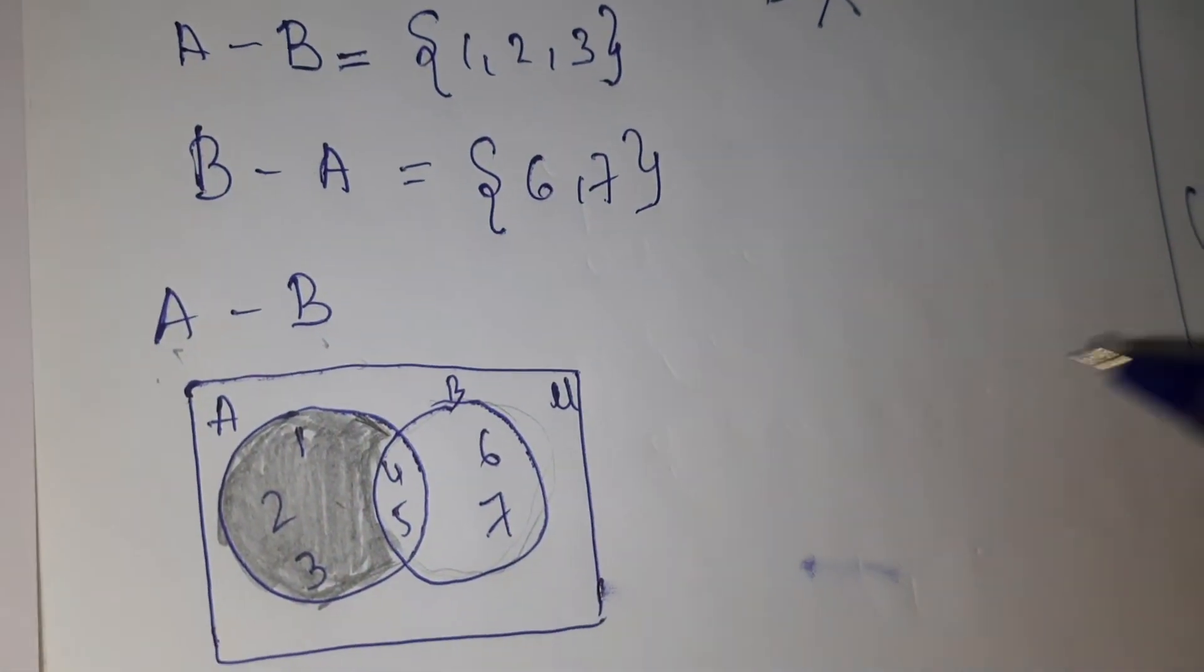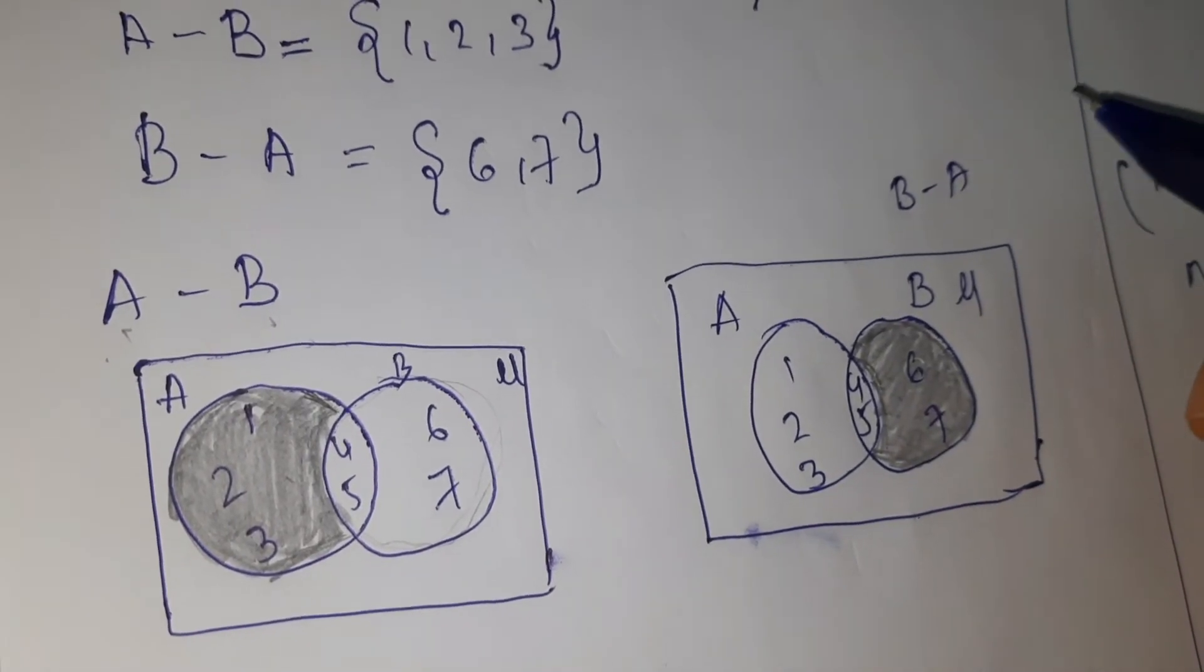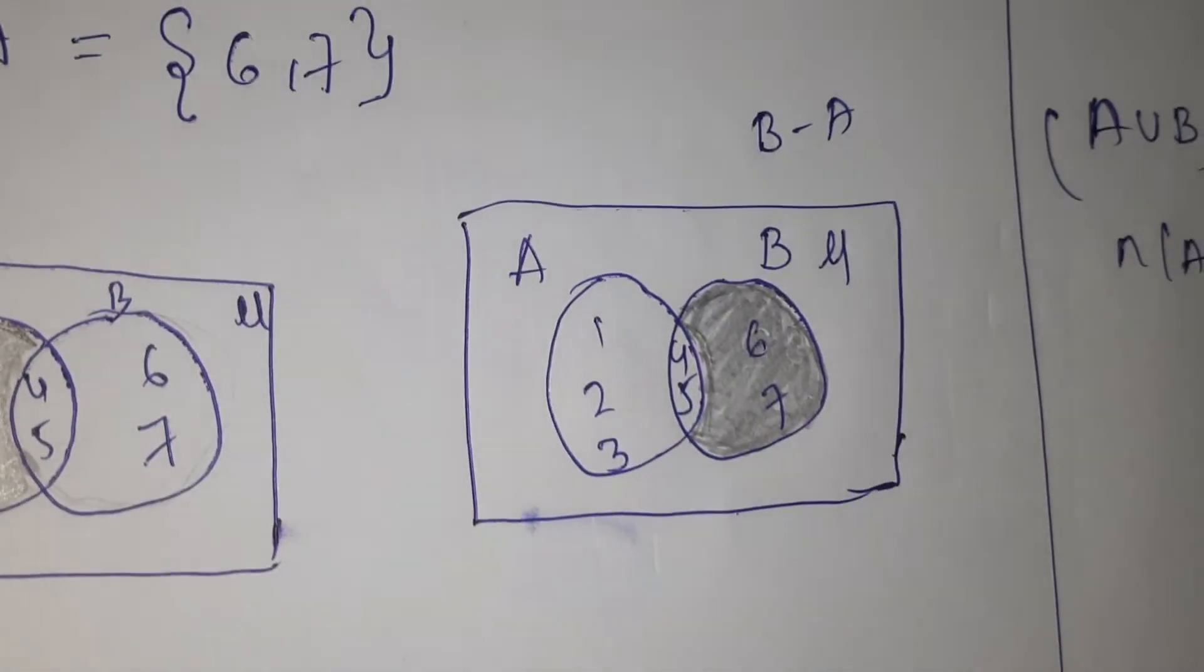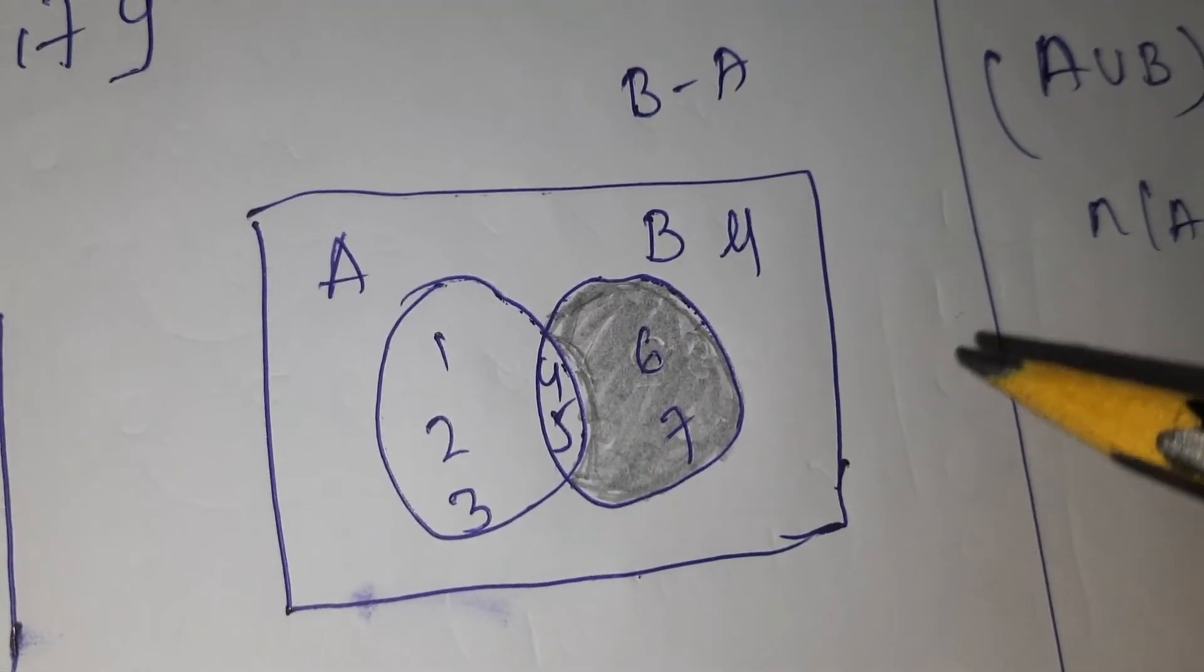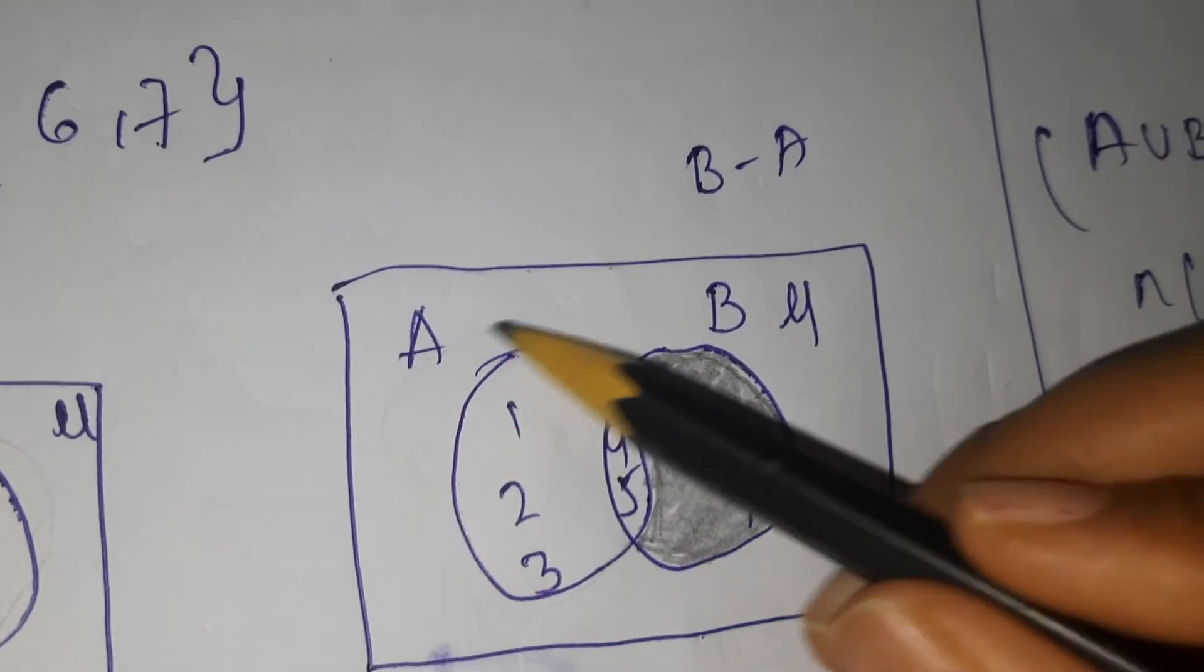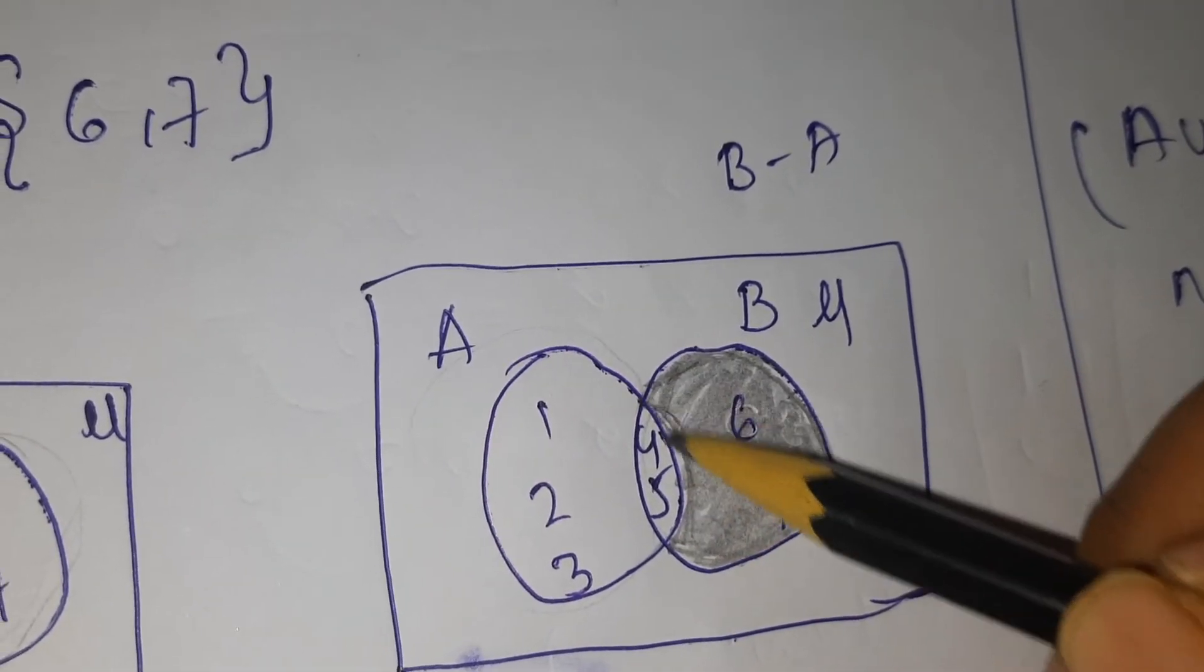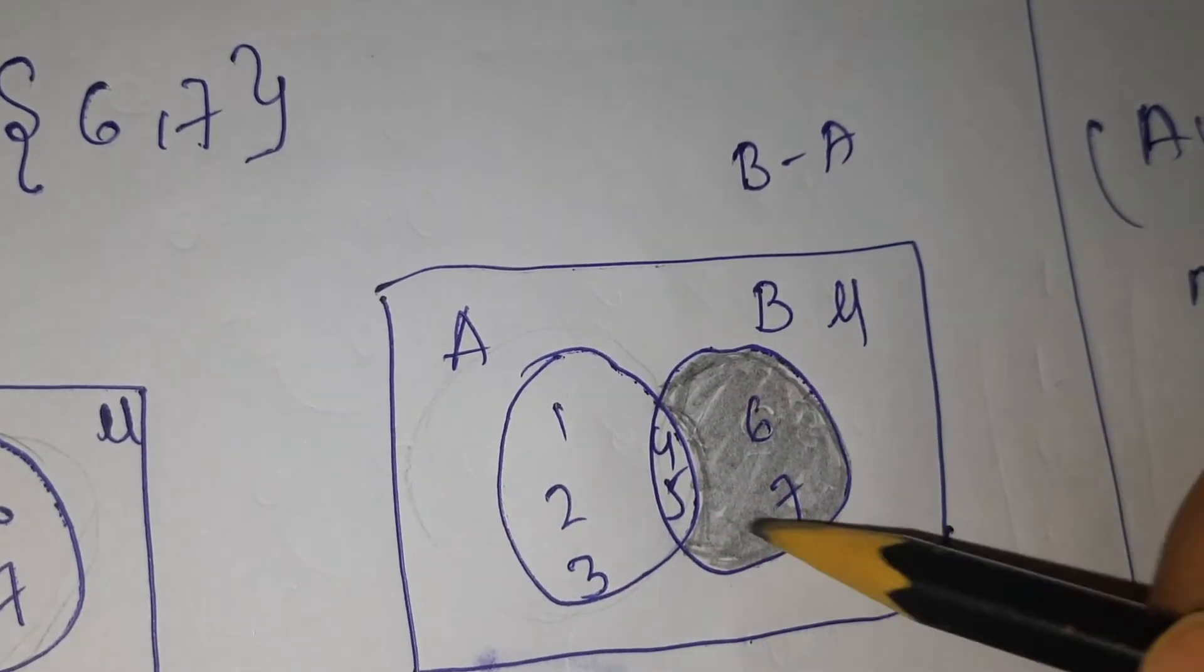Now let's see for B minus A. I'm drawing the Venn diagram. So see here for B minus A, what we should do is we have to remove the entire A part. That means common is also included. Whatever is in B, that is the answer for B minus A.